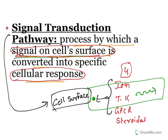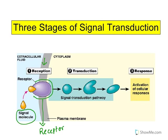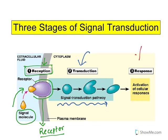Signal transduction refers to the process by which a signal on the cell surface is converted into a cellular response inside the cell. A ligand or drug comes and binds to receptors on the cell surface, causing a specific cellular response. There are three major steps: reception, transduction, and cellular response. Reception means a biomolecule will receive a ligand or signal molecule — the biomolecule which receives a drug or ligand is known as a receptor. The internal changes that result are called transduction, and finally it results in a cellular response.